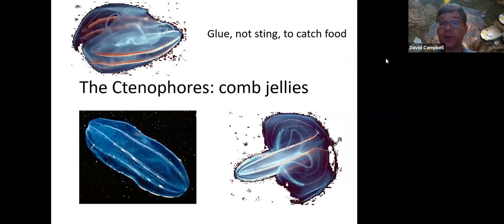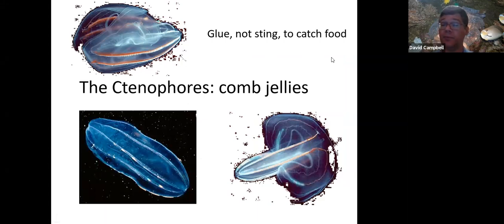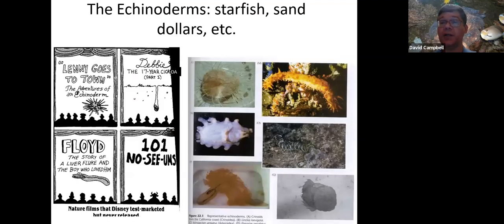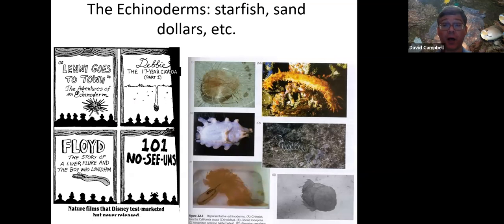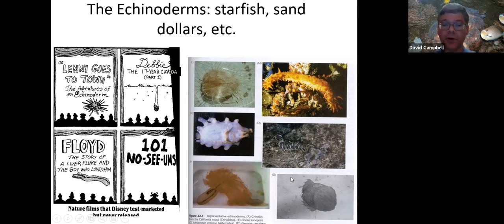A group that looks somewhat like jellyfish but actually is a different phylum are the comb jellies, or ctenophores. Instead of stinging, they have sticky cells on their tentacles and are catching food with a glue approach rather than stinging. Echinoderms are the group that includes starfish, sand dollars, sea cucumbers, brittle stars, and things like that. As the cartoon suggests, they tend to not be all that lively — relatively slow-moving forms. Echinoderms typically have a pattern of five directions of symmetry, familiar from starfish but also found in others. The pictures here are some of the less familiar things — a heart urchin and five different types of sea cucumbers.